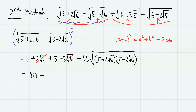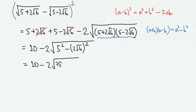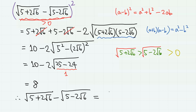Applying the difference of squares formula, the product (5 + 2√6)(5 - 2√6) becomes 5² - (2√6)² = 25 - 24 = 1. So we have 10 - 2 × 1 = 8. Now we take the square root to obtain the value. Notice that 5 + 2√6 > 5 - 2√6 and both are positive, so their positive square roots satisfy the same inequality, meaning this expression is positive. Therefore, we take the positive square root of 8, which is 2√2.